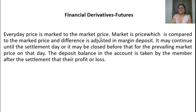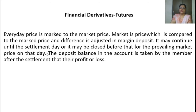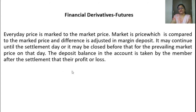This may continue until the settlement day, or it may be closed before that for the prevailing market price on that day. The deal is for 3 months, but you can continue for 3 months or close it in between at the market rate prevailing on that date. The deposit balance in the account is taken by the member after settlement as their profit or loss. Every day there is a settlement — once settled, the account holder gets profit or pays loss.